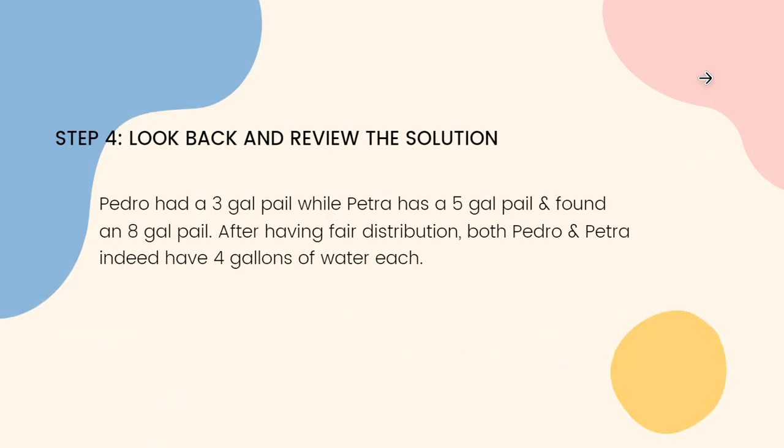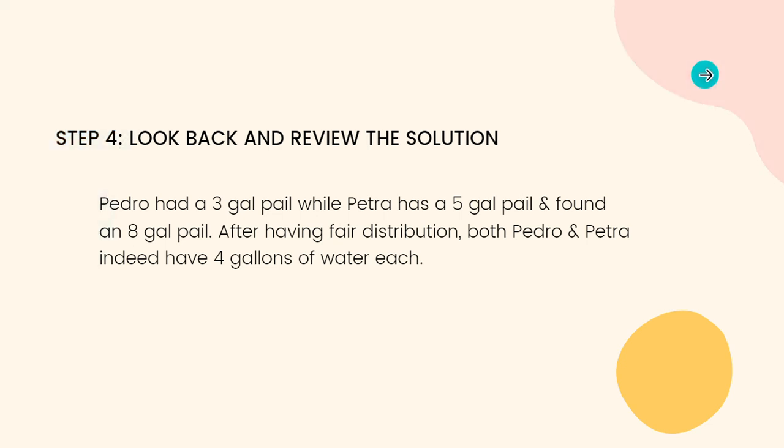To review and check: Pedro had a three gallon pail while Petra had a five gallon pail, and they found an eight gallon pail. After having a fair distribution, both Pedro and Petra indeed have four gallons of water each.